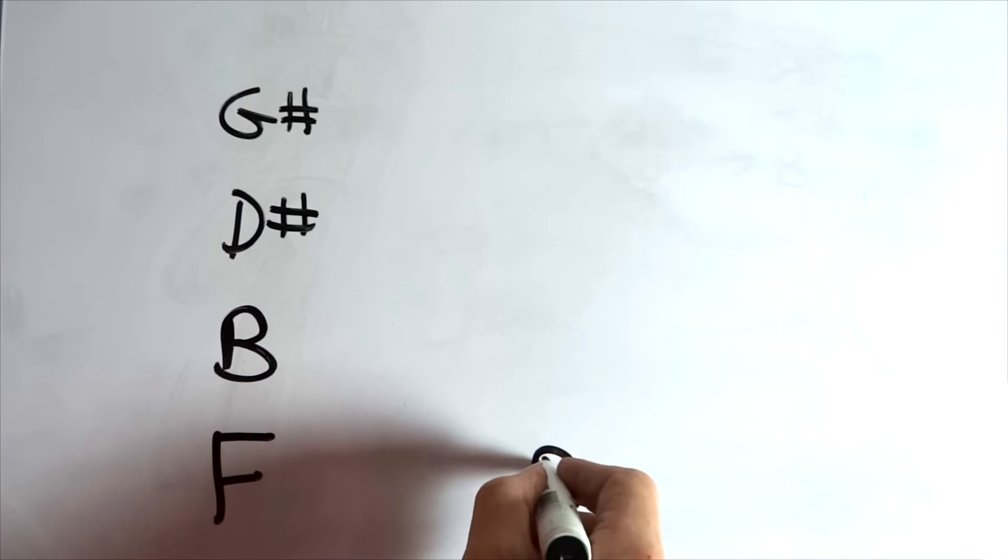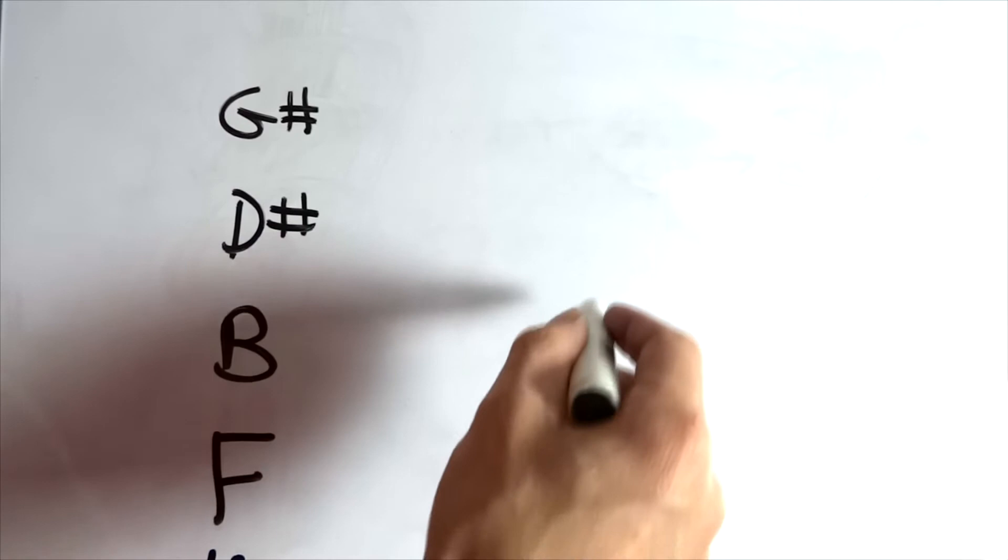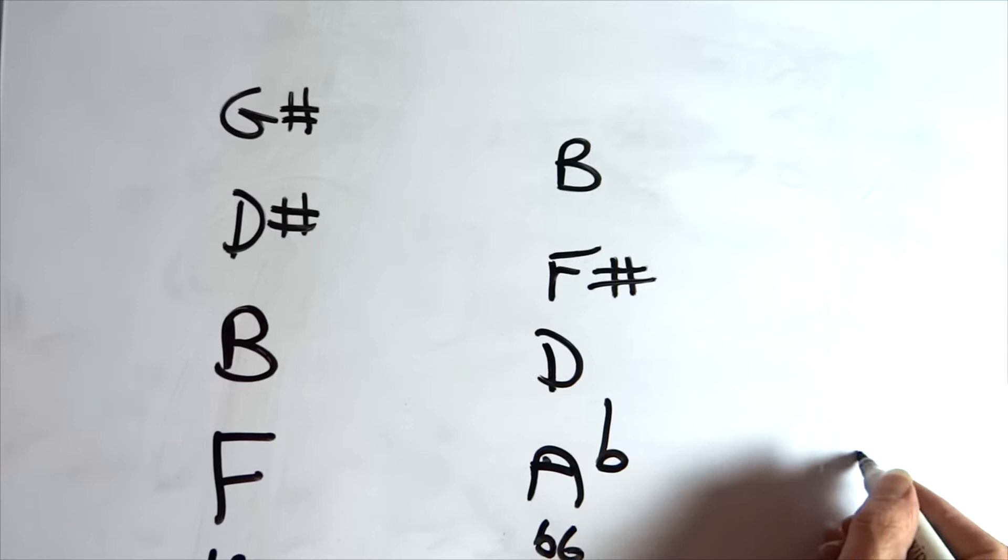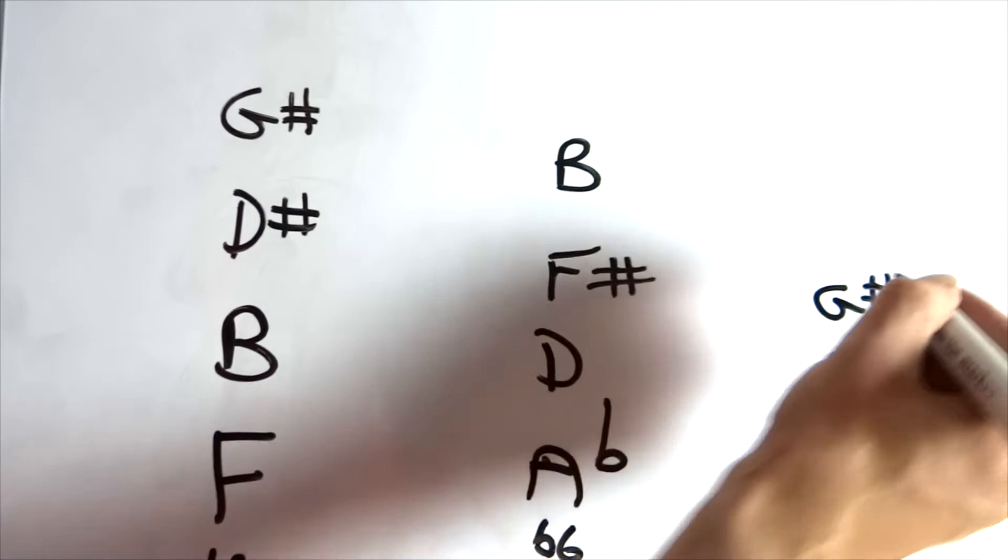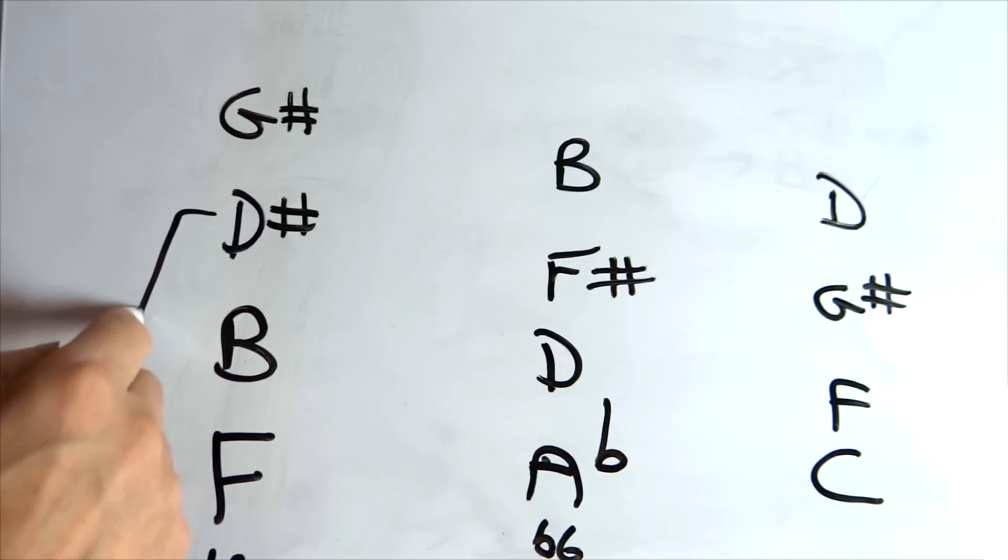Then we have the next one. This one is in bar 2 and then bar 6. So we've got an A flat, D, an F sharp and a B. And then later on we've got a C, an F, G sharp and D. Again, you can see this kind of major relationship B to D sharp here, you can see that relationship there, but here you can see a distinct change.